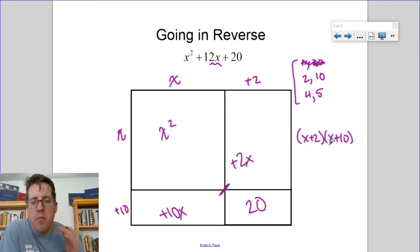So my answer here is x plus 2 times x plus 10. What you want to have in the back of your head is that those two numbers multiply to 20 and add to make 12.